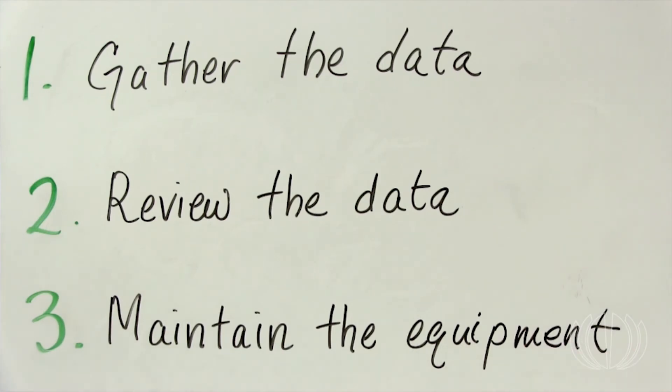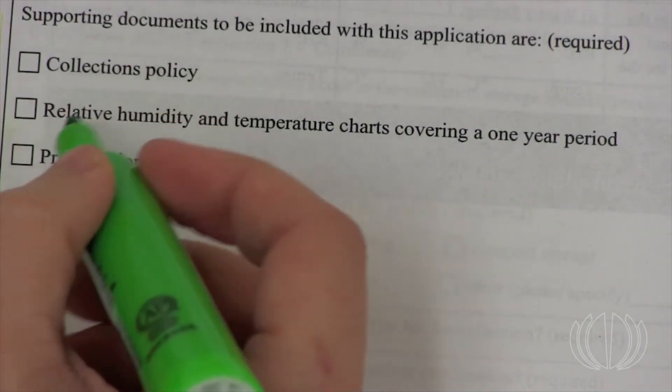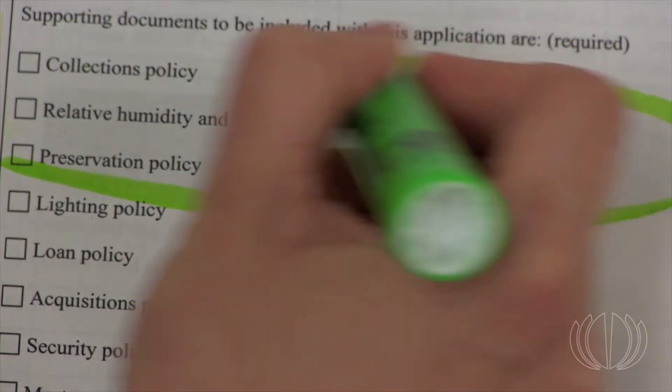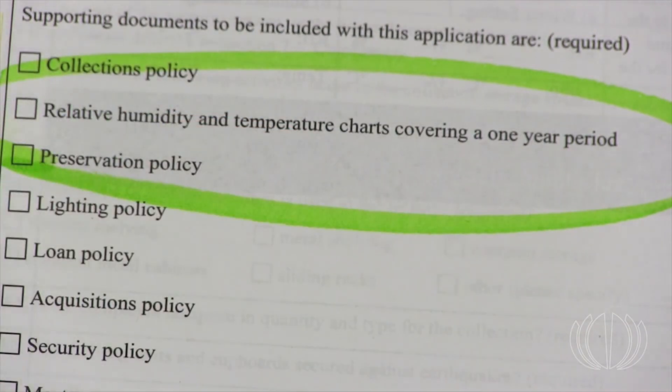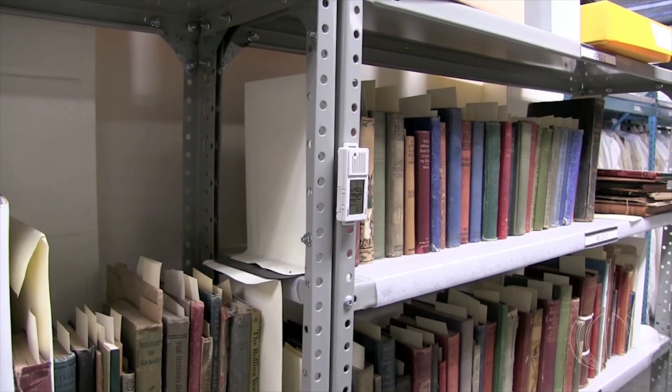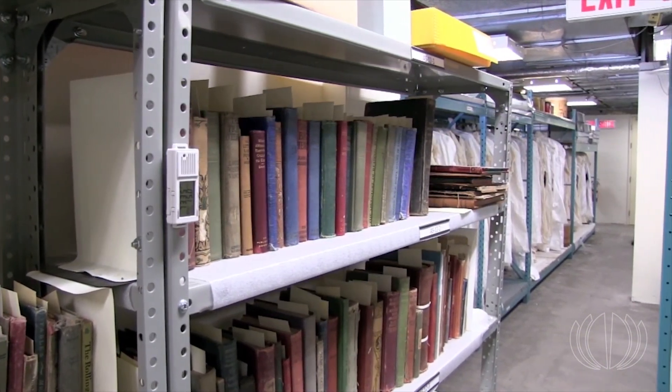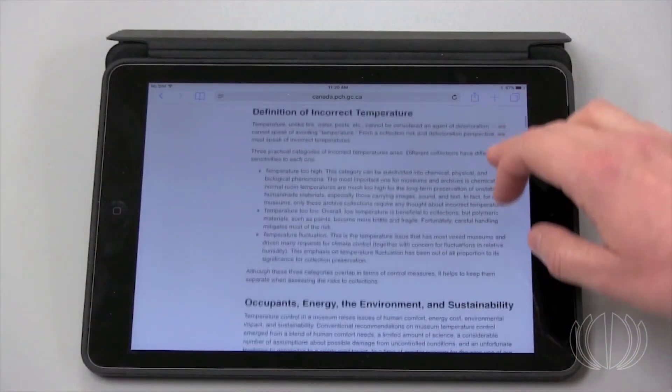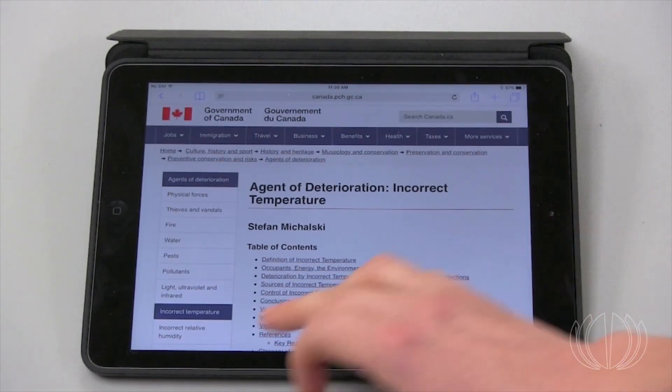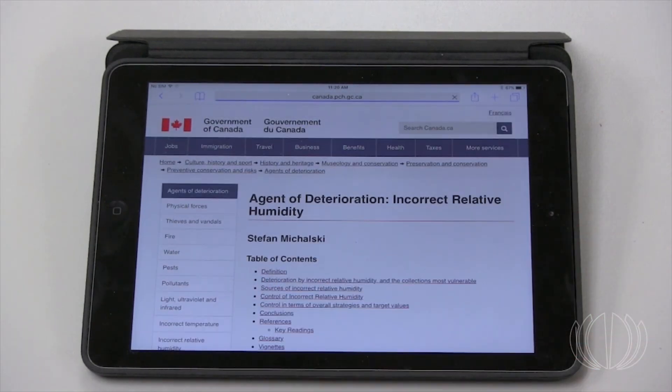This will allow you to provide records of your conditions to agencies that require them for loans, certification processes or grants, and they will permit you to make informed decisions for your collection and its long-term preservation. For more information about the effects of RH and temperature on collections, please visit the CCI website.